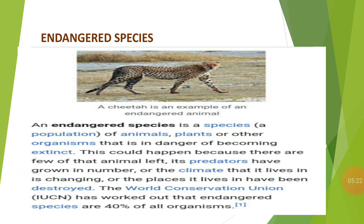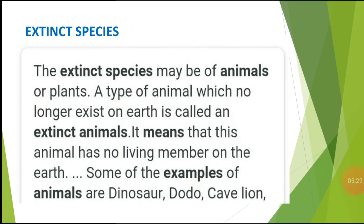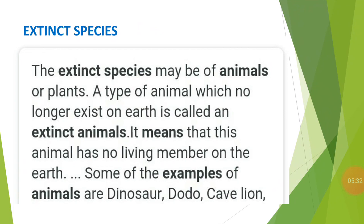Our next topic is about extinct species. These are mainly those species which no longer exist anywhere on earth — species which have totally disappeared. That kind of species is commonly known as extinct species. For example, sea cow and dodo — dodo is the name of a bird that became extinct. The extinction mainly happens when environmental factors or evolutionary problems cause the species to die out.